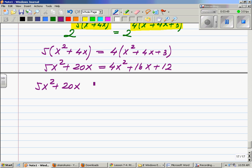On the left I have 5x squared plus 20x, the expression that was already there, and then I have minus 4x squared minus 16x minus 12 equals 0. Combine like terms: 5x squared minus 4x squared would be just x squared, 20x minus 16x will be plus 4x minus 12 equals 0.